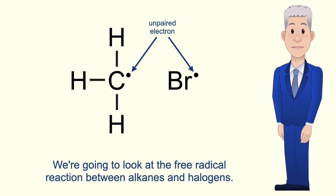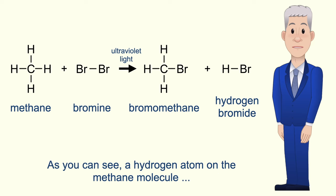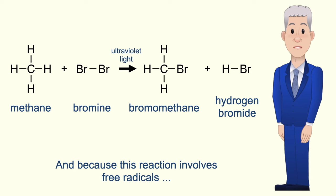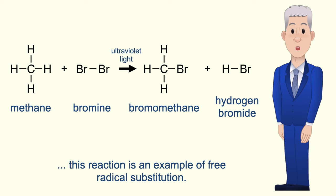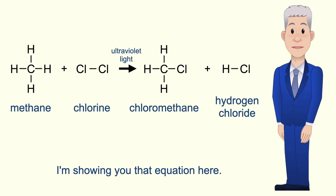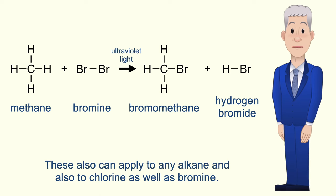We're going to look at the free radical reaction between alkanes and halogens. I'm showing you here the equation for the reaction between methane and bromine. As you can see, a hydrogen atom on the methane molecule has been substituted with a bromine atom, and because this reaction involves free radicals this is an example of free radical substitution. We also see free radical substitution in the reaction between methane and chlorine. So we're going to look at the stages in the reaction between methane and bromine, but these can also apply to any alkane and also to chlorine as well as bromine.